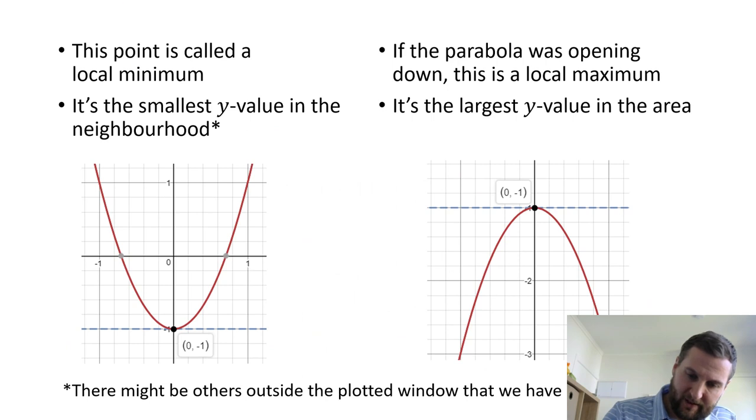This special point here is called a minimum because it's the lowest value in the local neighborhood. So looking on the curve, any other values around here are bigger. And by values I mean the output value on the y-axis. So this one is zero, this one is plus 1, they're all bigger than minus 1. That's the absolute minimum of that parabola.